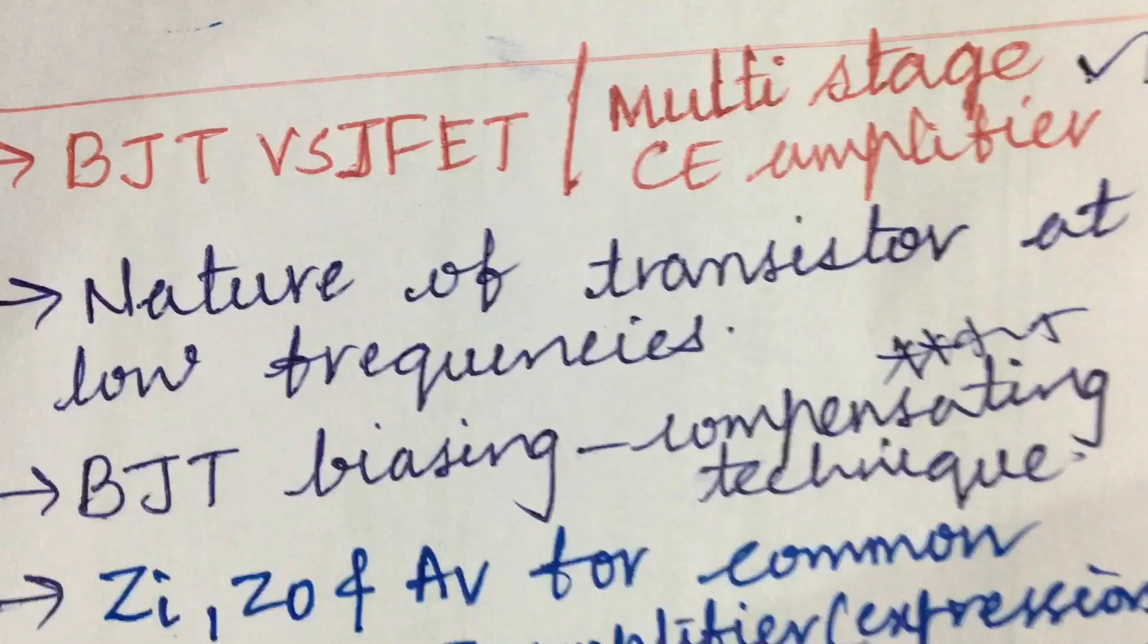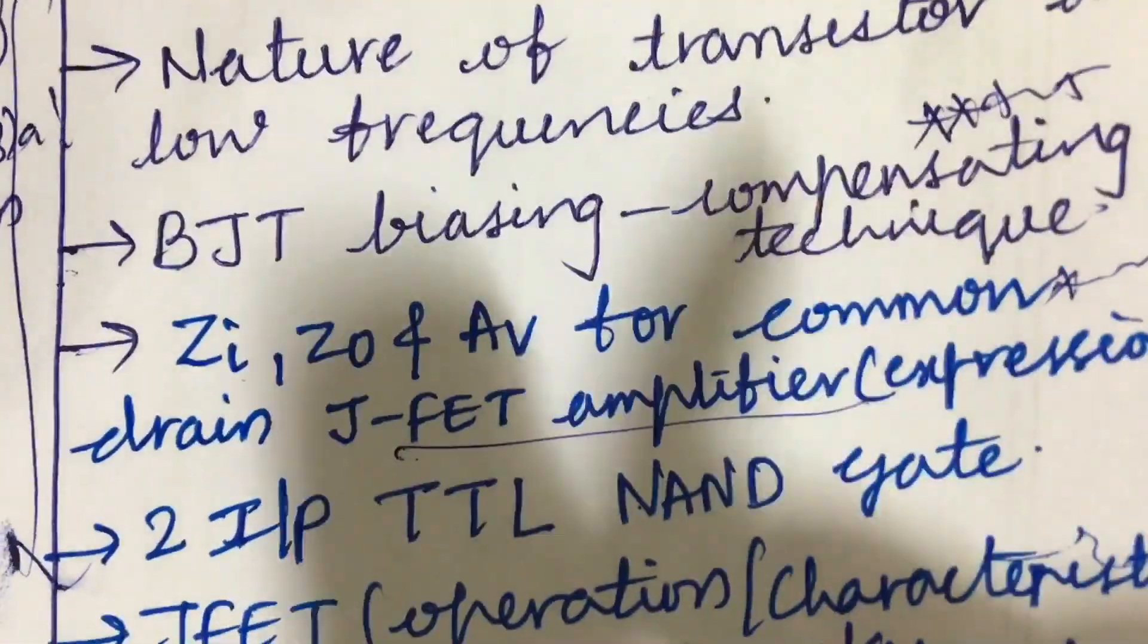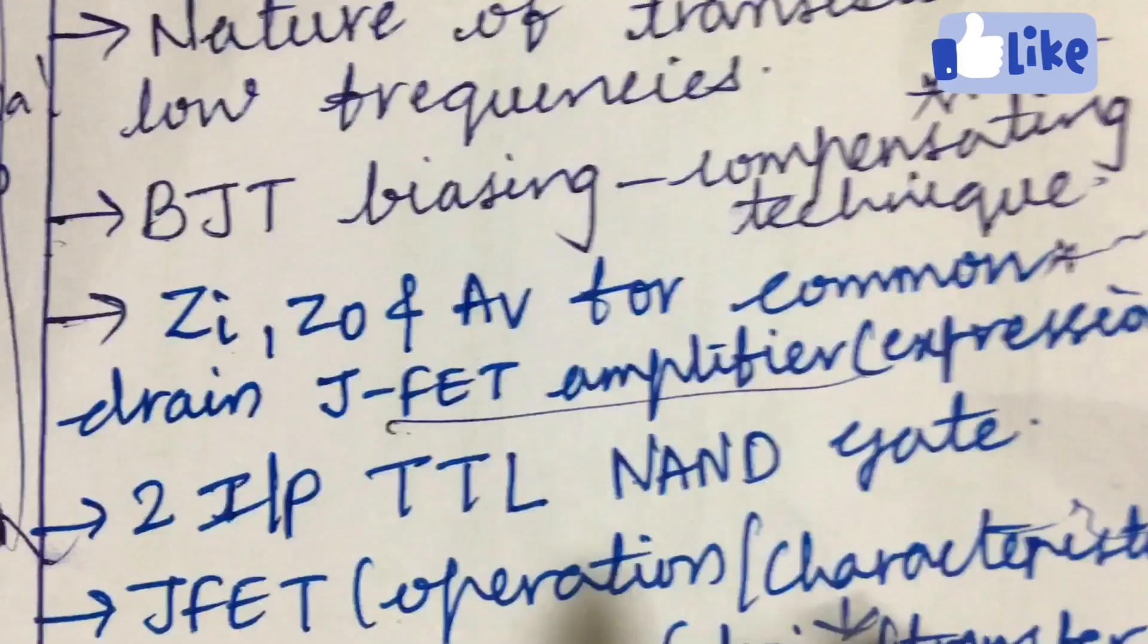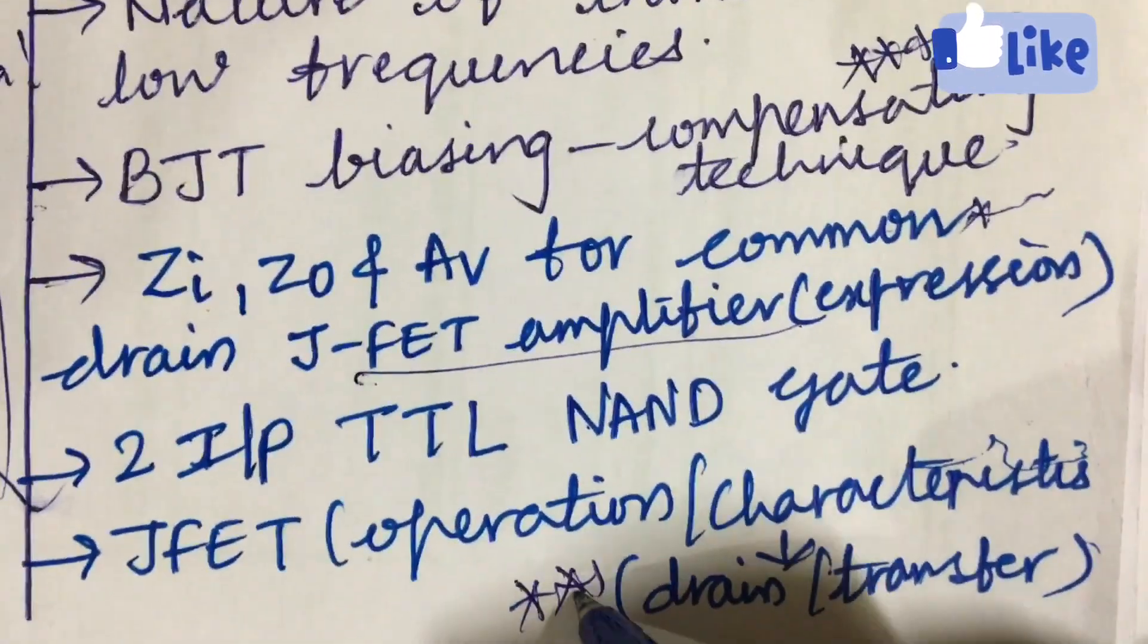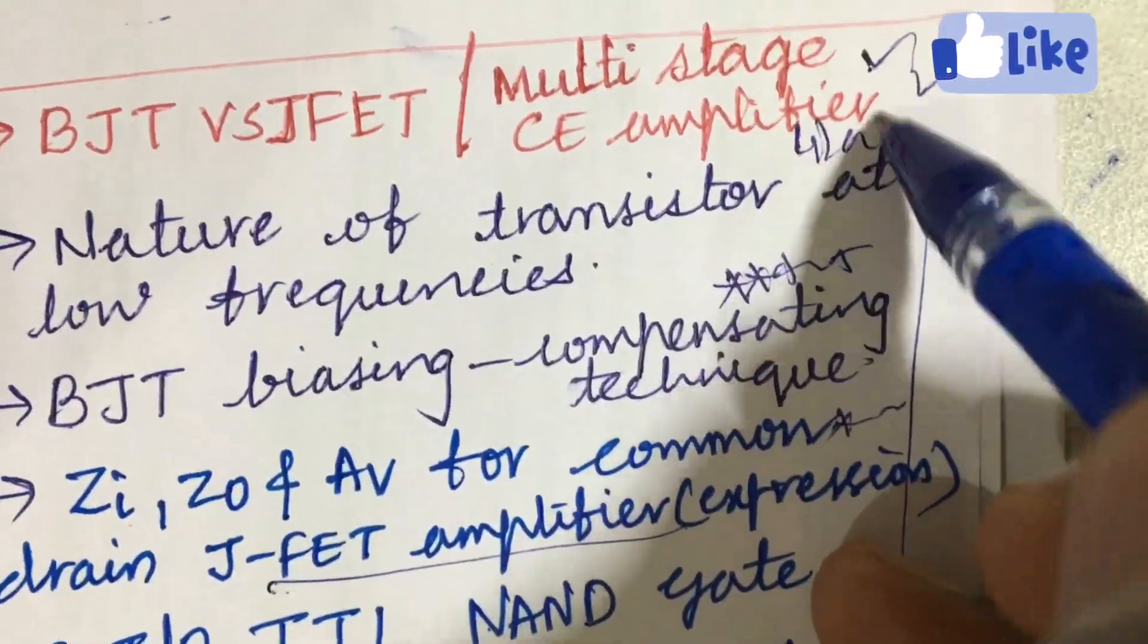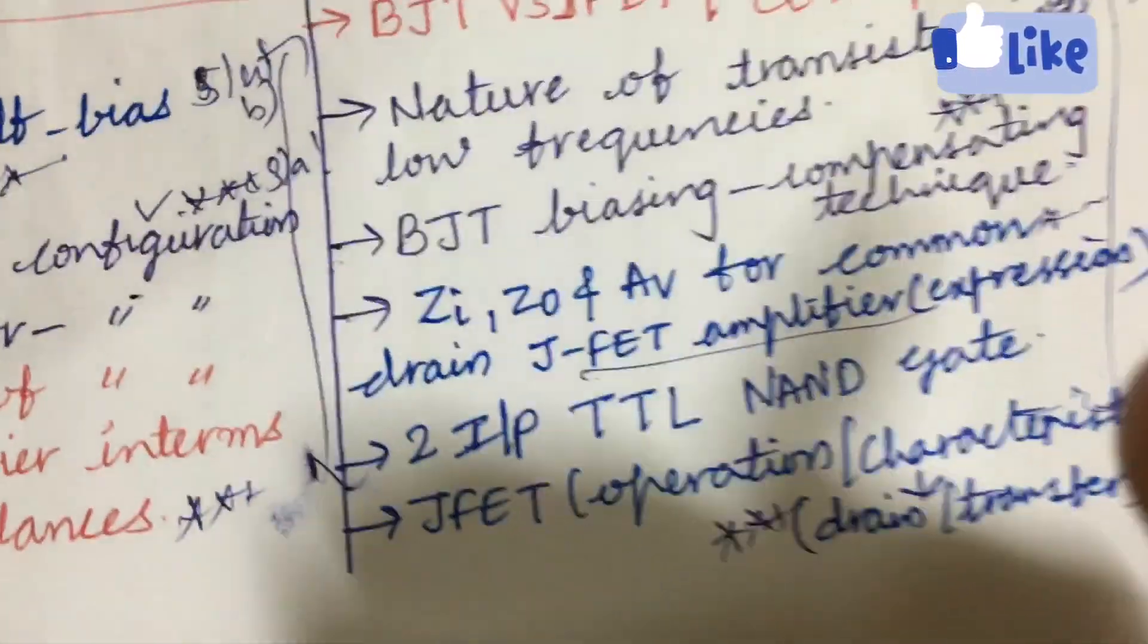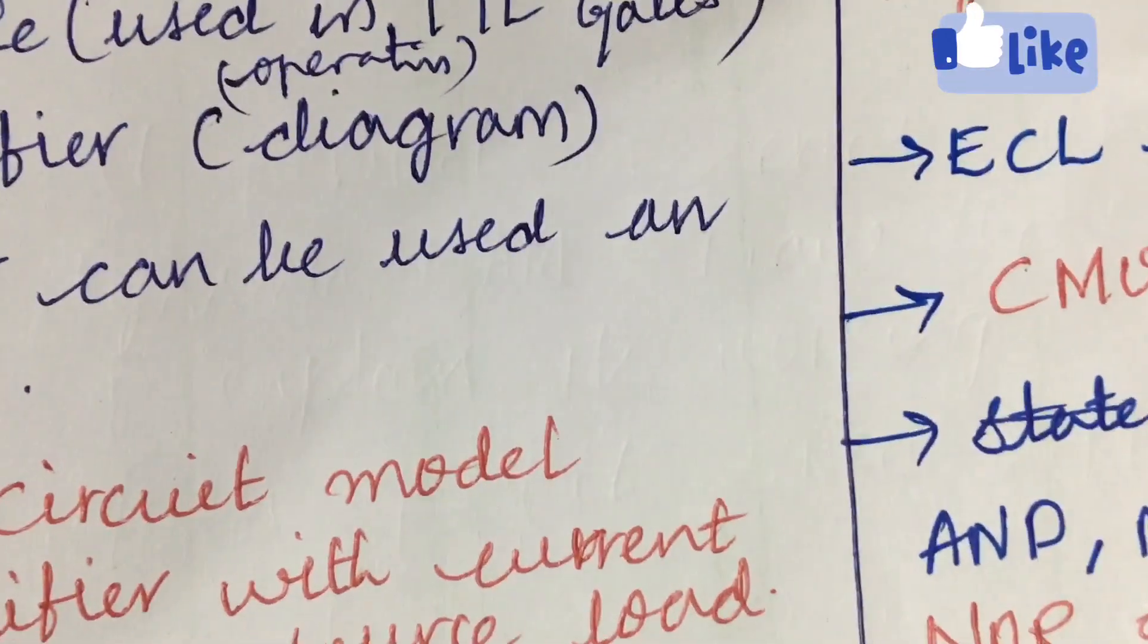Explain two-input TTL NAND gate and JFET operation characteristics of drain and transfer. This is also one of the very important questions. From this part we can expect 4A as well as 4B, dear students. Without skipping any topic, please do work out each and every case which I have kept here on your paper. Please do work out and draw the diagrams very neatly.